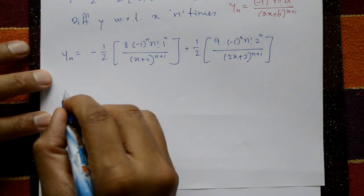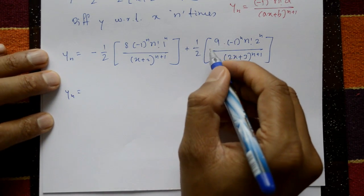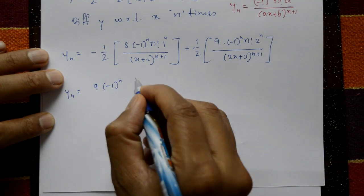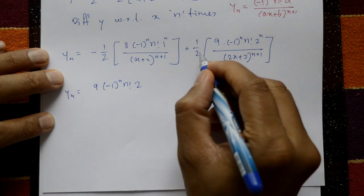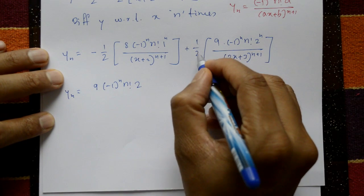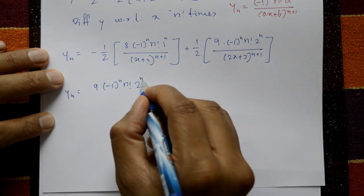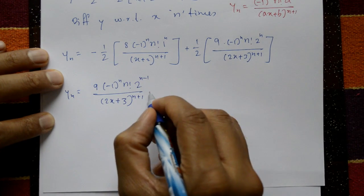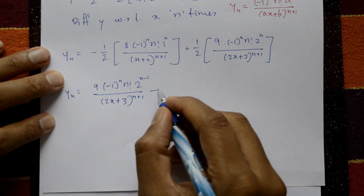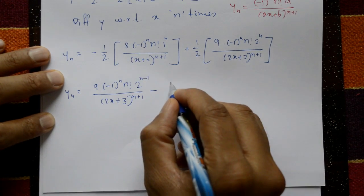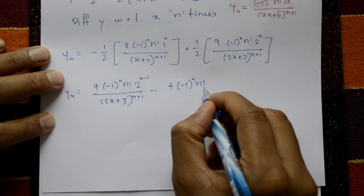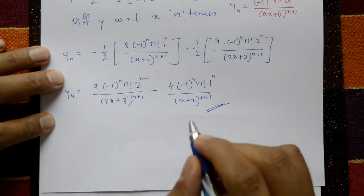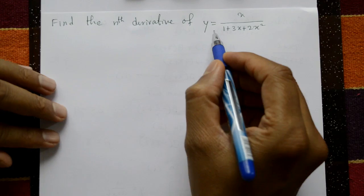Therefore y_n = 9·(-1)^n · n! · 2^n / (2x+3)^(n+1) minus 4·(-1)^n · n! · 1^n / (x+2)^(n+1). This is the required solution.